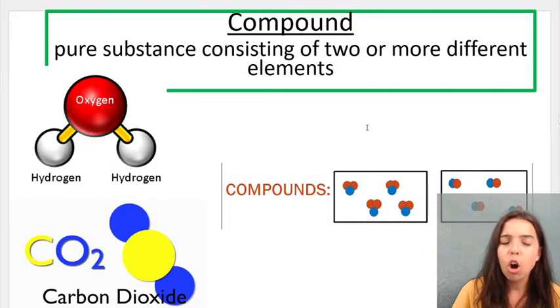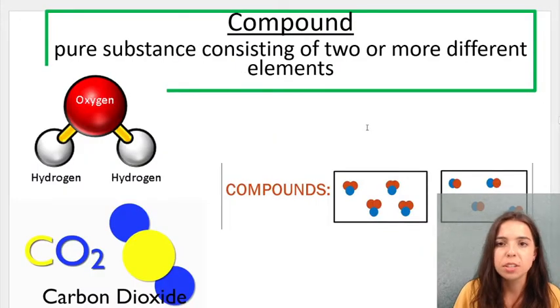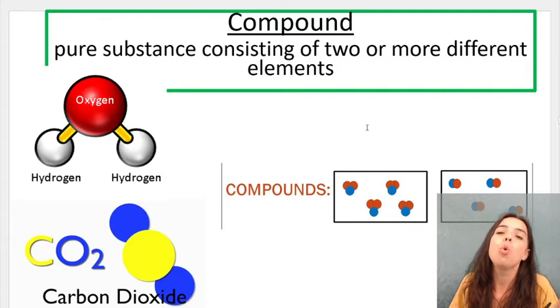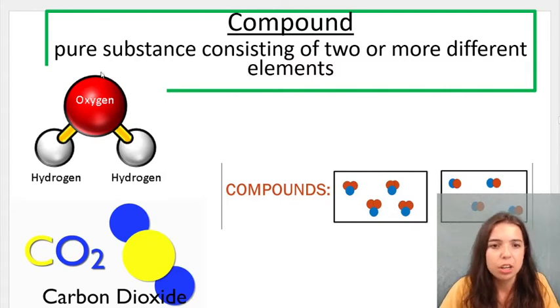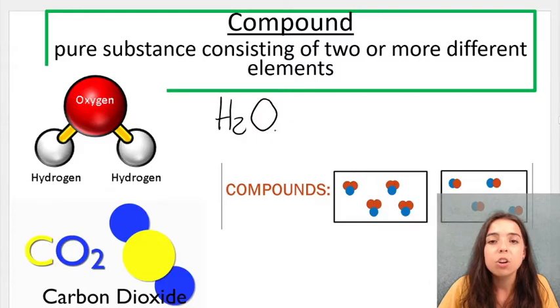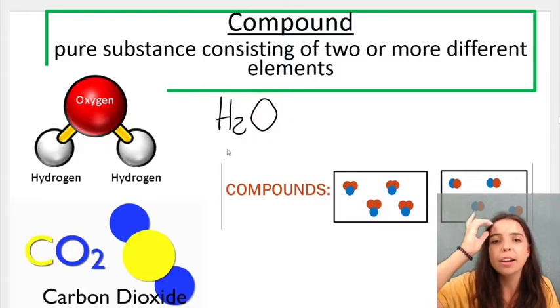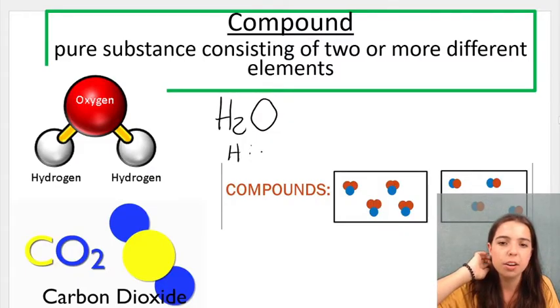Then we get compounds. Compounds are also pure substances, but they consist of two or more different elements combined in a fixed ratio. So this over here is hydrogen, hydrogen and oxygen. We discussed that already. That's water. And that consists of two elements combined in the ratio of two to one. Hydrogen to oxygen, two to one.